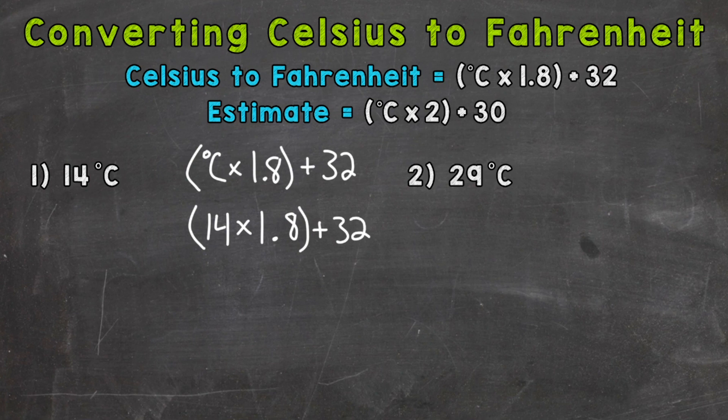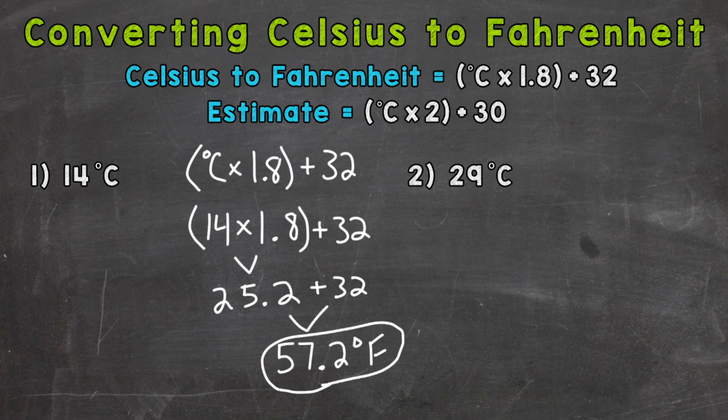So 14 times 1.8 is going to give us 25.2. You can either do that by hand or punch that into a calculator. Either way, 25.2. Then we add 32. So 25.2 plus 32 is going to give us an answer of 57.2 degrees Fahrenheit. So 14 degrees Celsius equals 57.2 degrees Fahrenheit.